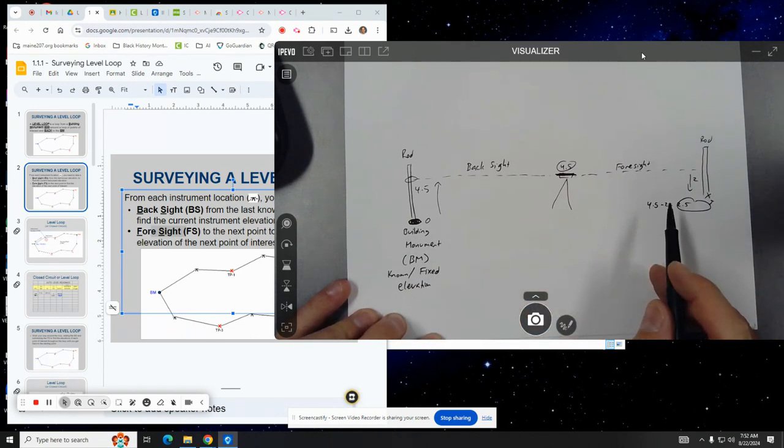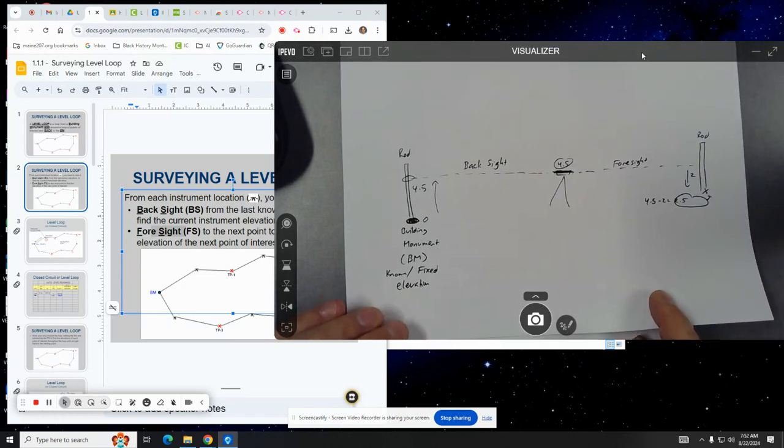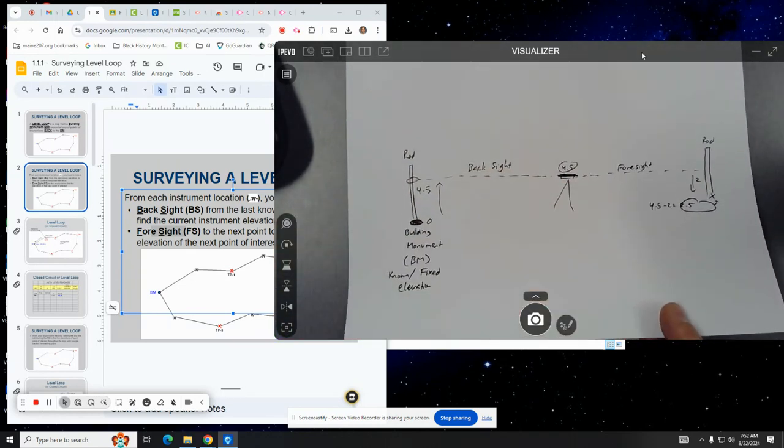So 4.5 minus two would get 2.5. That would be the elevation of that point there. So that's a rough kind of explanation of how this all works. And why we're going to be adding the back sight and subtracting the foresight each time.